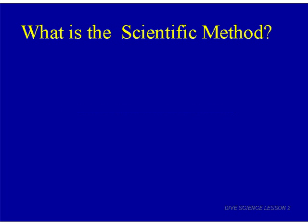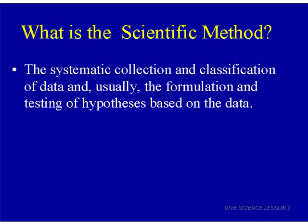Let's start this lecture by defining what the scientific method is. Here's a definition out of Webster's Dictionary: the systematic collection and classification of data. Systematic means a step-by-step or organized approach, so if you have a systematic collection of data, you have an organized collection of data.